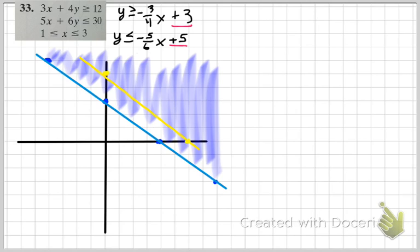Or a solid line, pardon me. Try that again. And this problem says y is less than or equal to, so I'm going to shade everything below my yellow line. You can already start to see some of the overlapping areas.